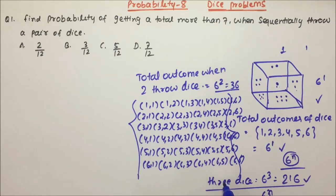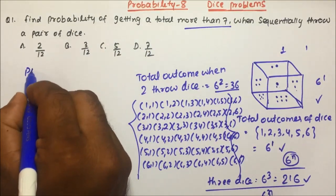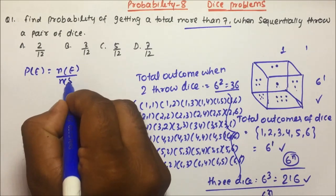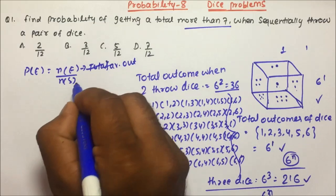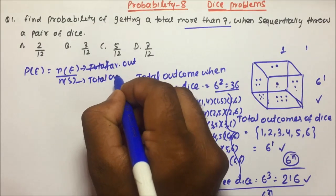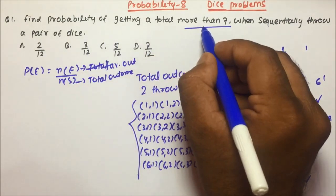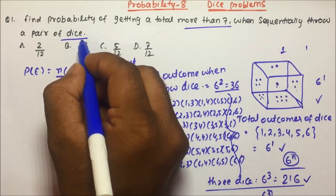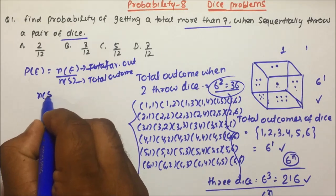So this will be the total outcomes. Now let us understand what kind of questions will be asked. Question 1: Find the probability of getting a total more than 7. The formula for probability is Ne divided by Ns, where Ne is the favourable outcomes and Ns is the total outcomes. When throwing a pair of dice, total outcomes Ns is 36.